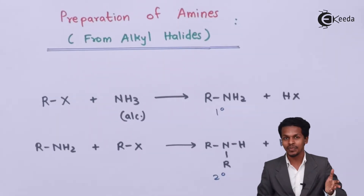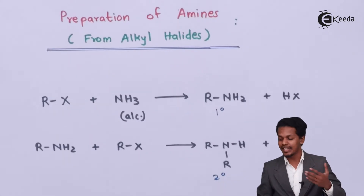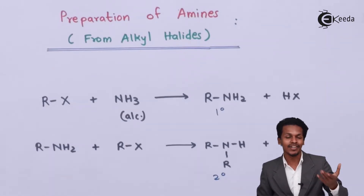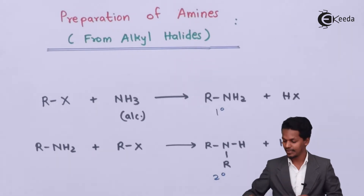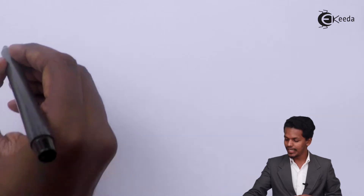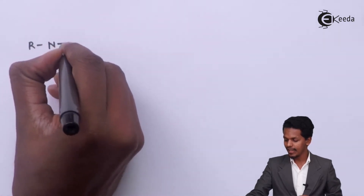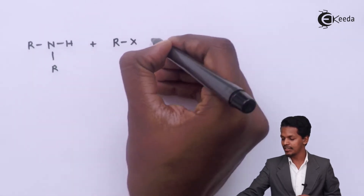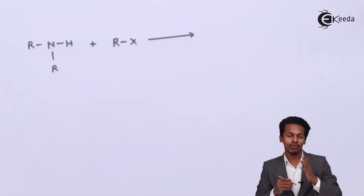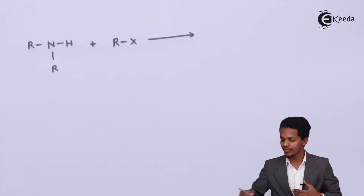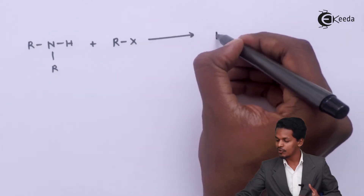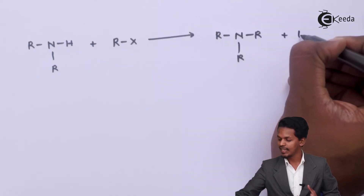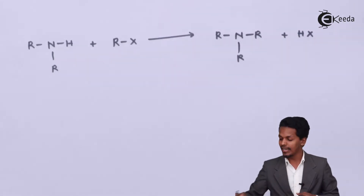But this reaction doesn't stop here. This secondary amine R–NH–R will also react with the remaining alkyl halides to form a tertiary amine. So if R–NH–R reacts with another molecule of RX at around 373 Kelvin, the product we get is R3N plus HX. This is how we obtain a tertiary amine.